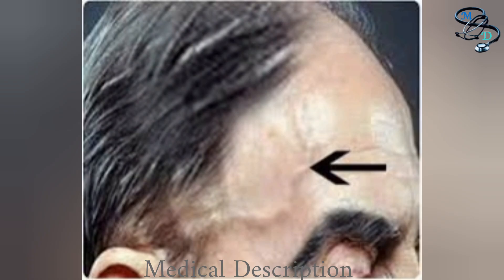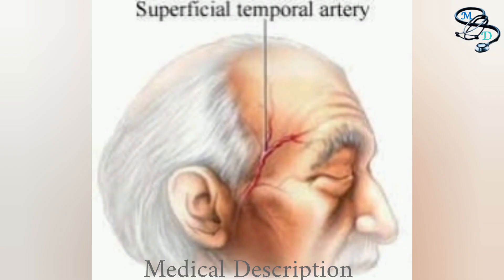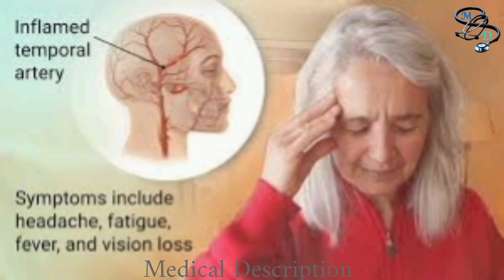The most common symptom of temporal arthritis is a throbbing, continuous headache on one or both sides of the forehead. Other symptoms may include fatigue, fever, jaw pain that may become worse after chewing, and tenderness at the scalp or temples.